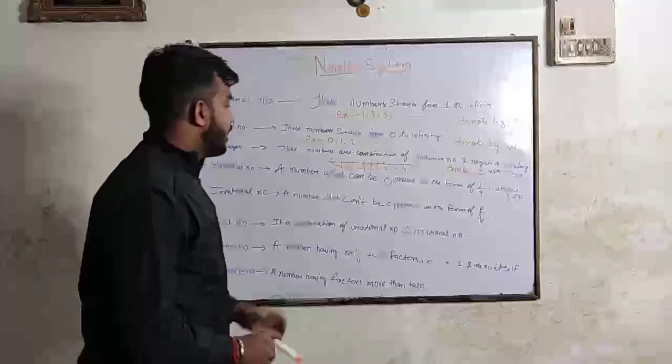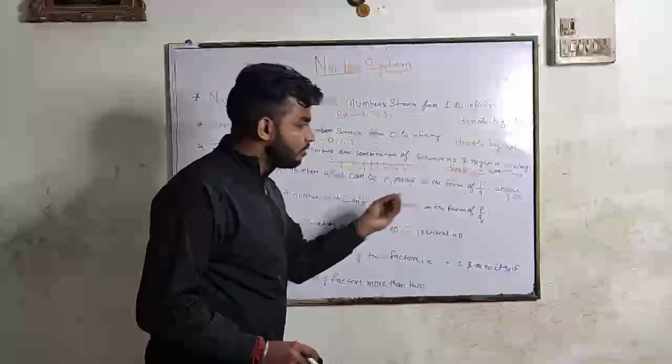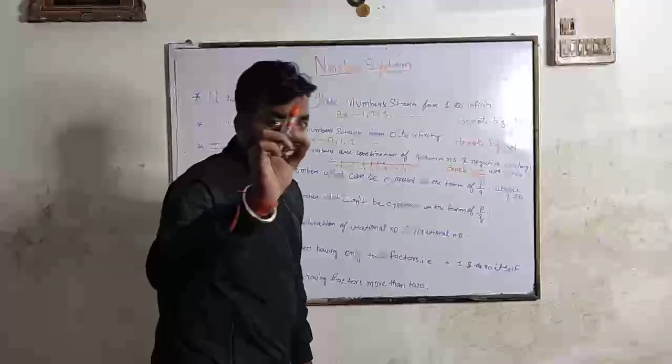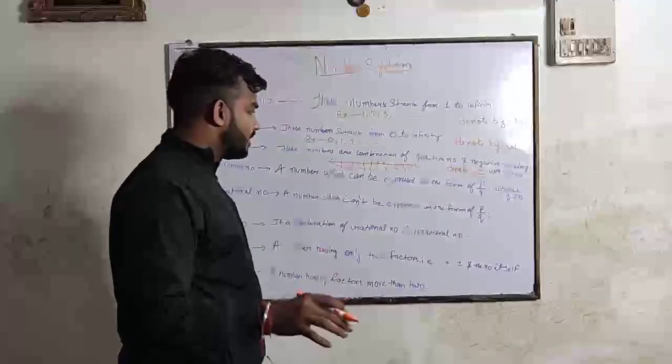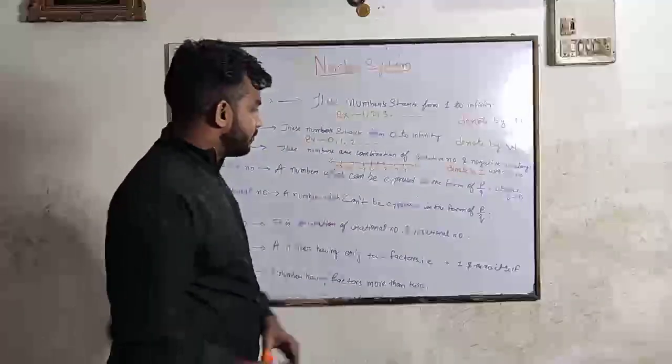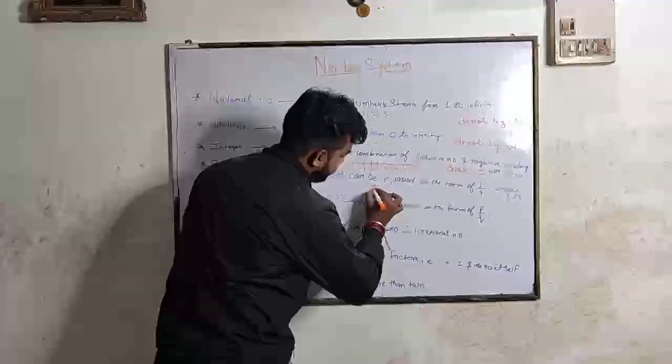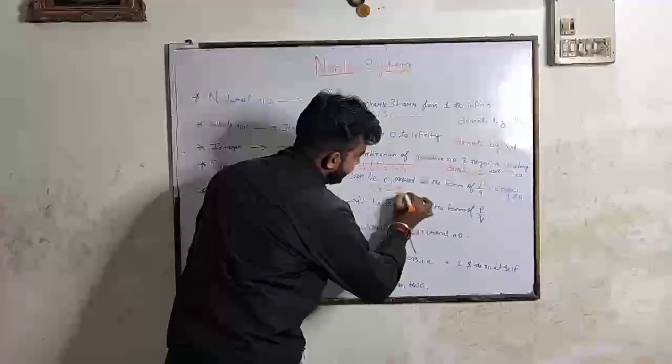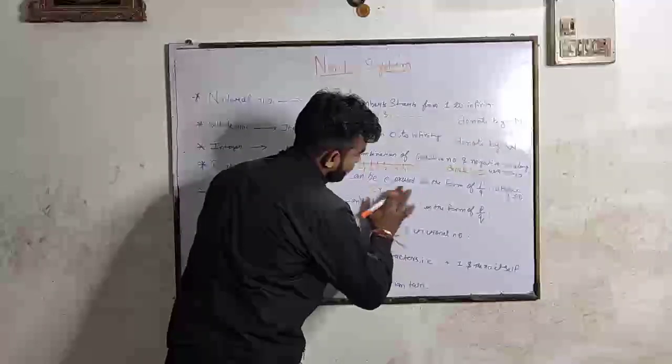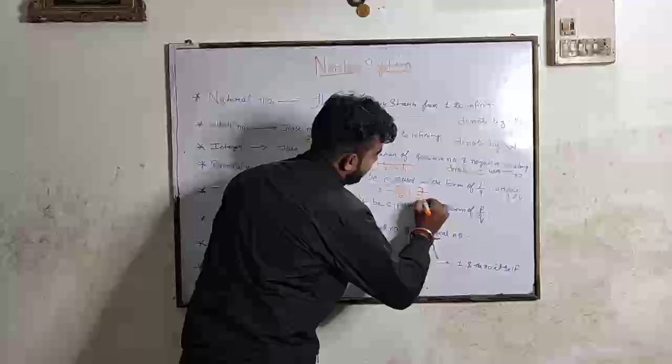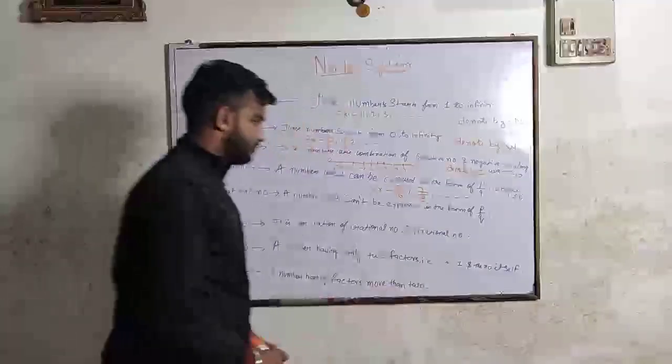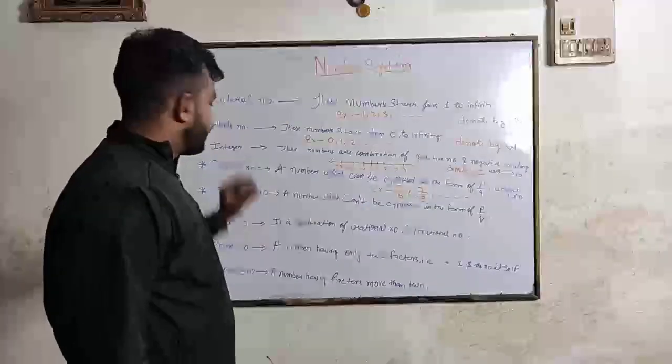Rational number. A number which can be expressed in the form of P by Q, where the Q is not 0, which means the number in the denominator never be 0. Example: 5 by 6, 7 by 8. These are the rational numbers.